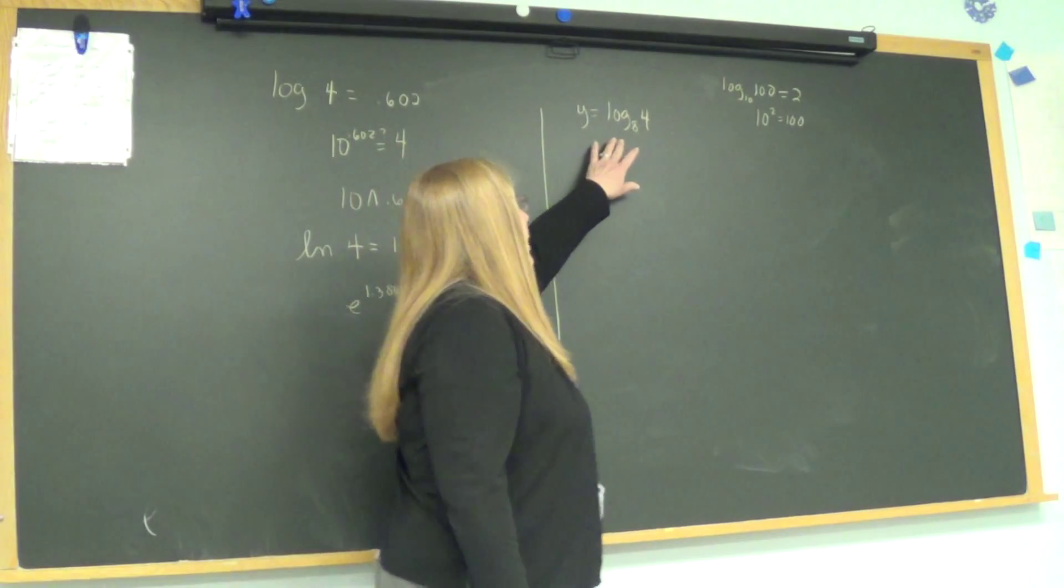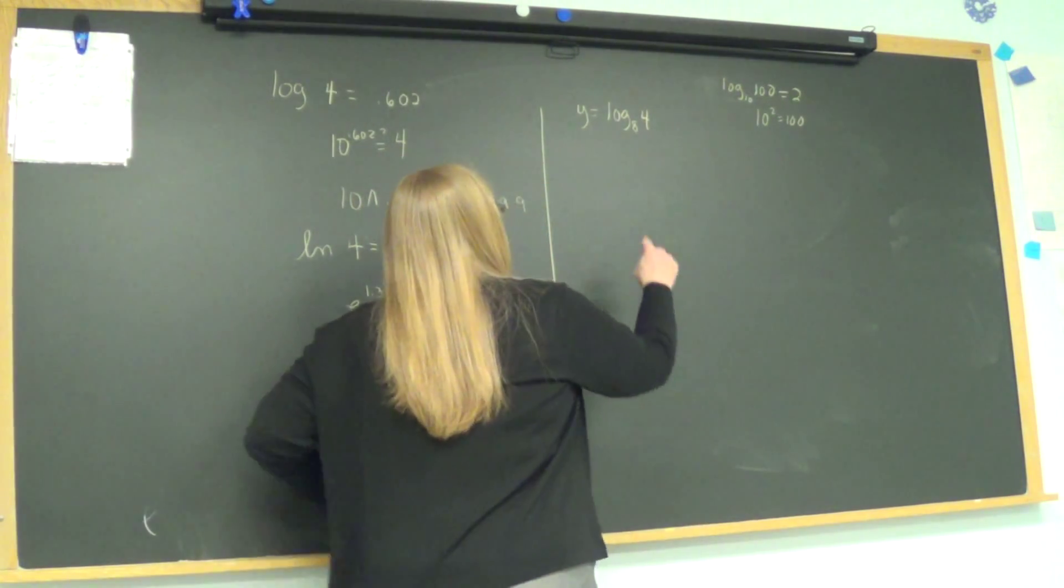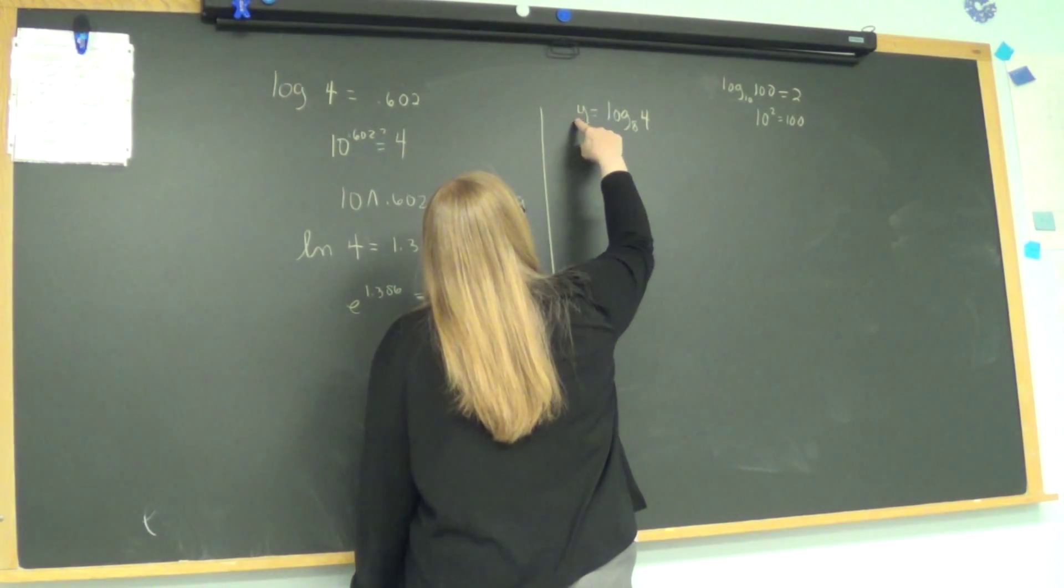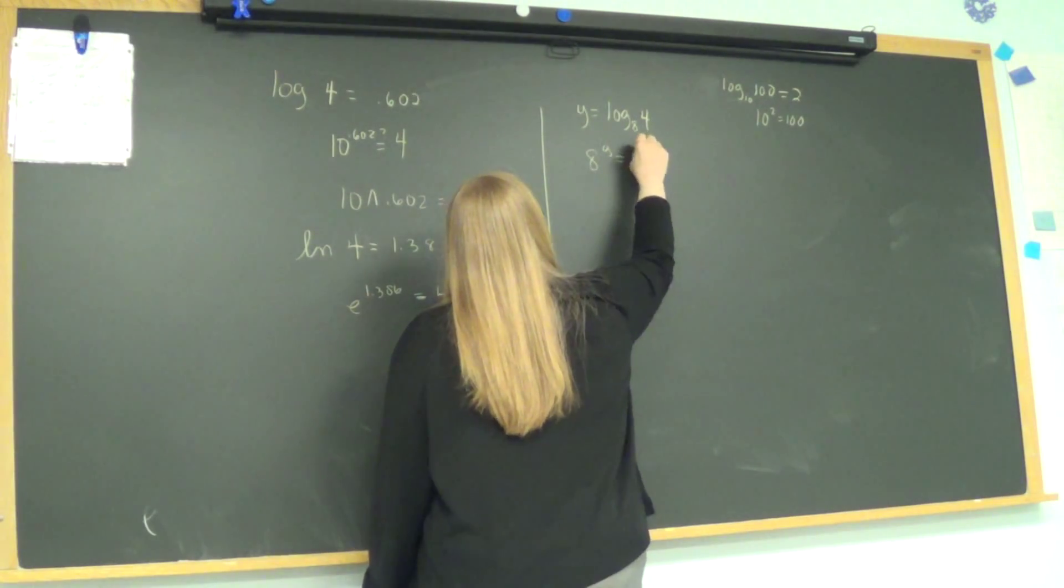So how can I rewrite this one in exponential form? It's always this base raised to this exponent equals that number. All right. So 8 to the Y equals 4.